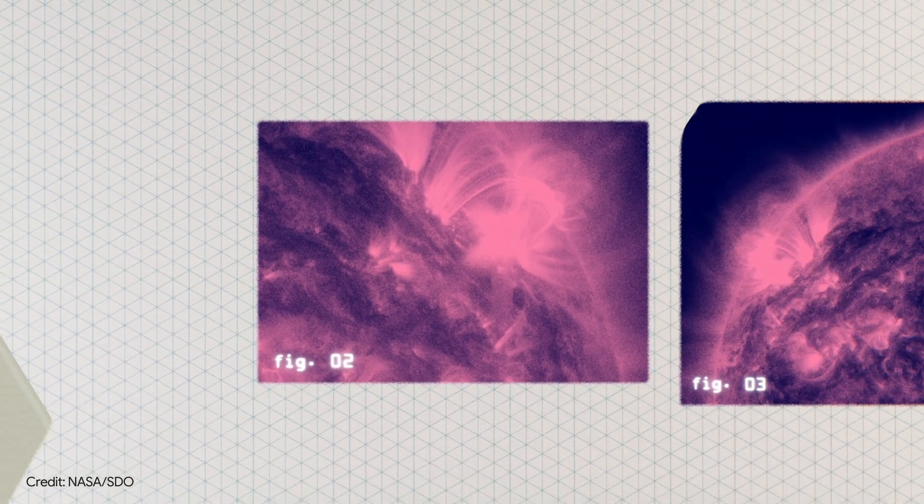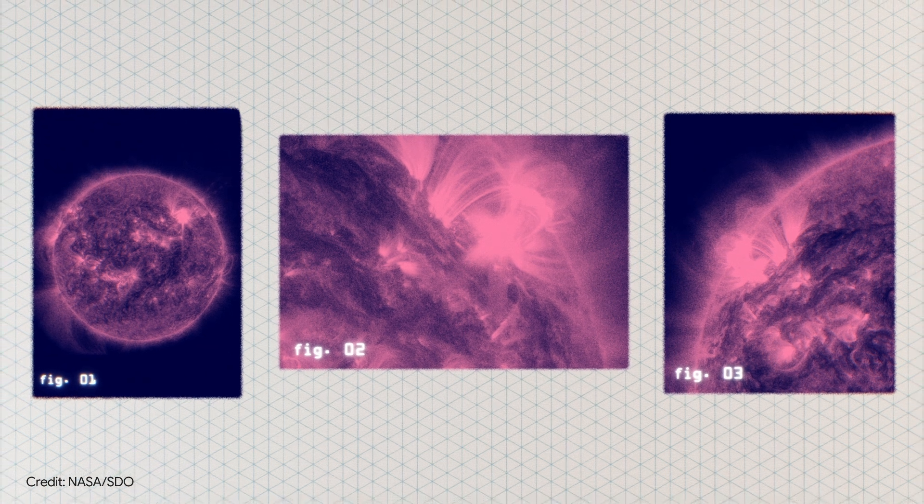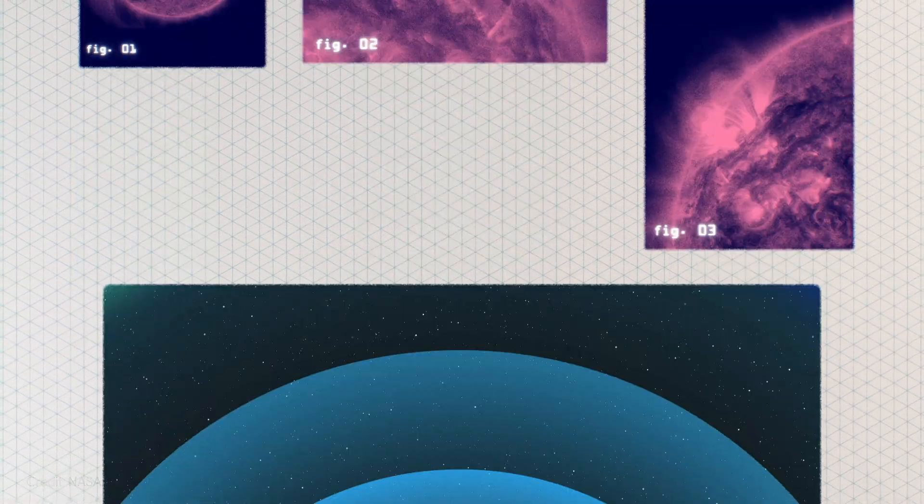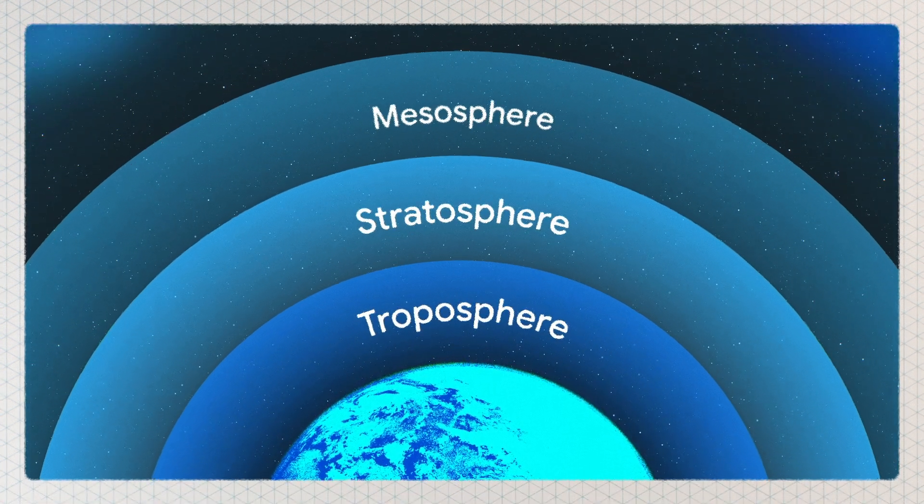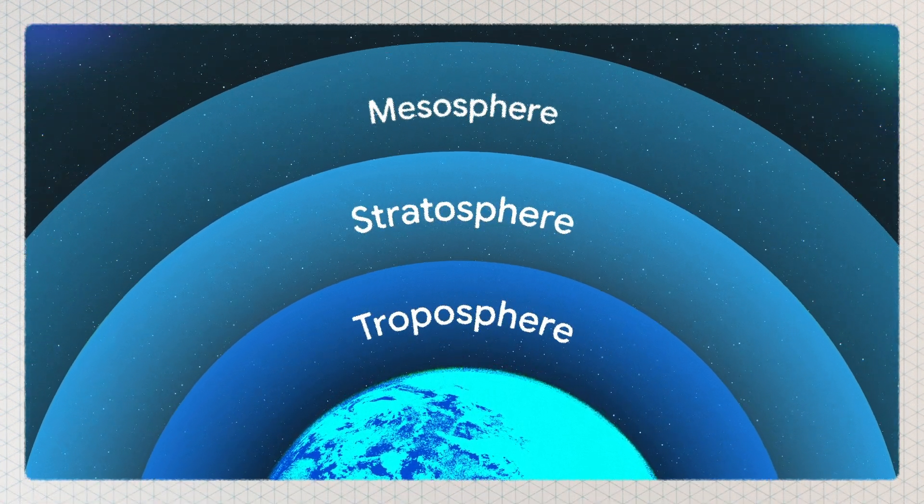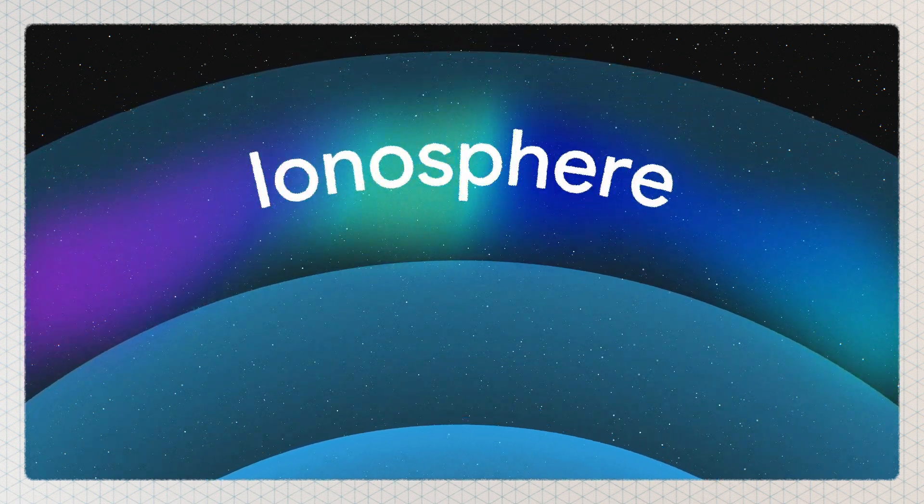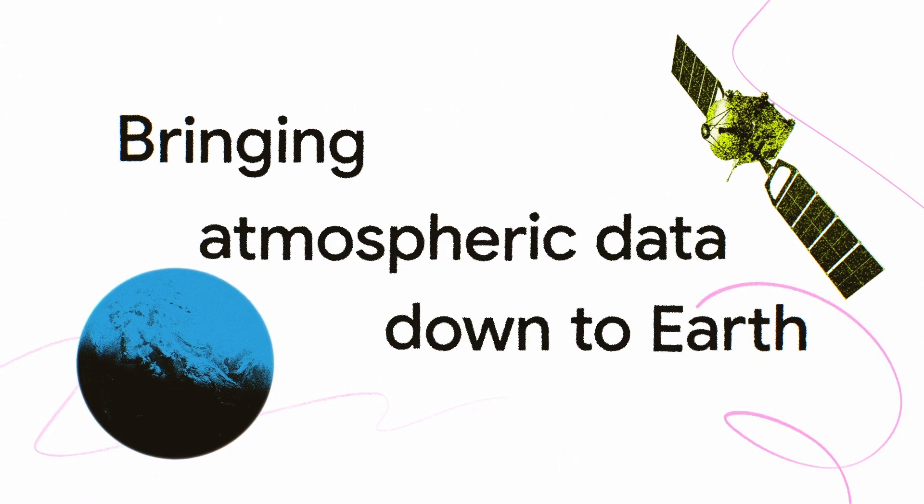That's because during that time, our sun had unleashed a massive solar storm, disrupting the atmosphere and location-based services across the planet. Today, we're learning how the phone in your pocket can improve GPS by creating better maps of a part of our upper atmosphere known as the ionosphere, bringing atmospheric data down to Earth.